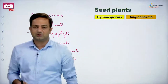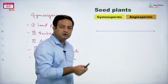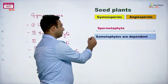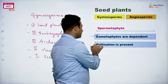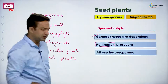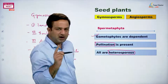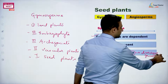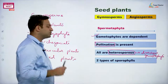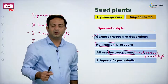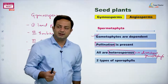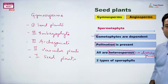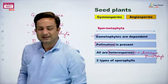The common characters shared by gymnosperms and angiosperms as metaphytes: their gametophytes are dependent. Number two, pollination is present — a new term we need to understand. All are heterosporous; heterosporous plants must form dioecious gametophytes. There are two types of sporophylls: microsporophyll bearing microsporangia and megasporophyll bearing megasporangia, forming microspores and megaspores respectively.